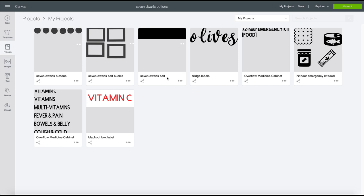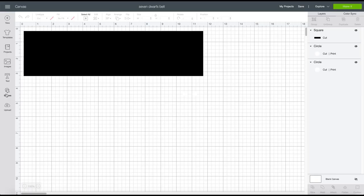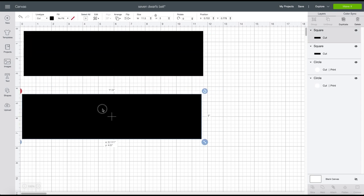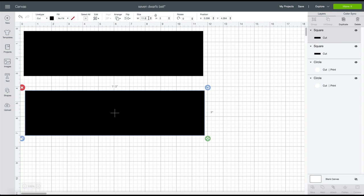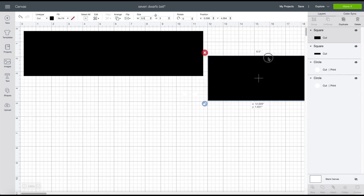In Cricut Design Space, I made three different projects: Seven Dwarfs Belt, Buckle, and Buttons. In the Seven Dwarfs Belt, I just used a square and made it 11½ by 3 inches. You go to Shapes here, add a square. The reason for that is it's going to cut 11½ for the mat that I have. I copied another one and made this 6½ inches because that's the width of the t-shirt. It's going to cut these two in the Explore Air 2. I ironed on the longer one first and then add the second one, and the good thing is that the buckle covers this part here.